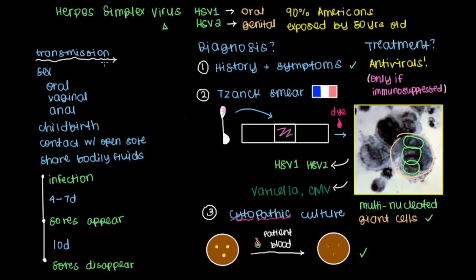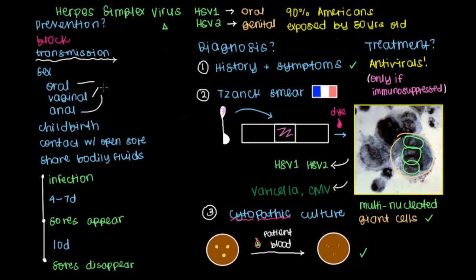In addition to treatment, what can we do to prevent the herpes virus in the first place? The mainstay of prevention for all sexually transmitted infections is to block transmission. Going down our list of modes of transmission, sex is one of the common ways, so one thing we can do during sex is to use a condom — that'll help limit direct contact. Additionally, for oral sex, use of dental dams can also decrease direct contact.